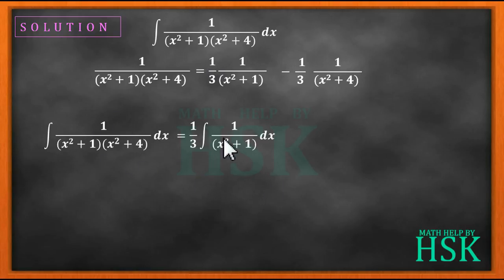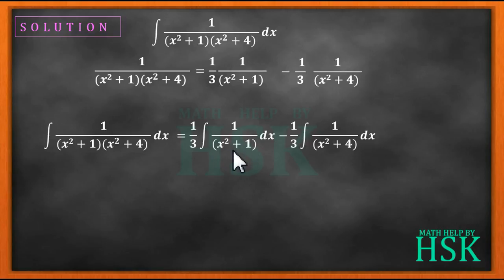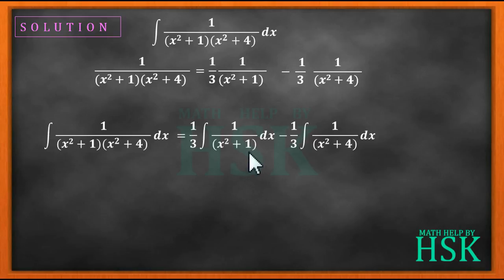The integration becomes (1/3)∫1/(x² + 1)dx minus (1/3)∫1/(x² + 4)dx. The formula that helps us is: ∫1/(x² + a²)dx = (1/a)·tan⁻¹(x/a). Since 1 = 1², the first integral gives (1/3)·tan⁻¹(x).